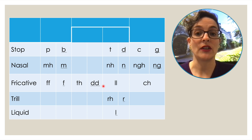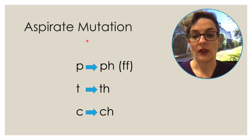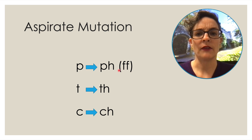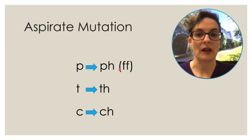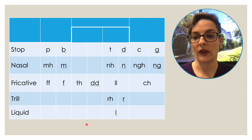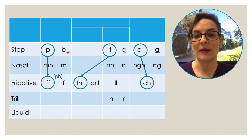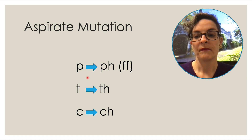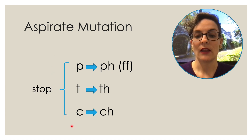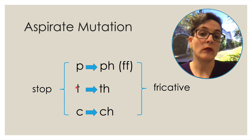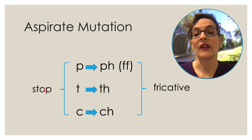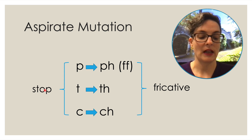So how can we apply the how dimension to mutations? Look at aspirate mutation: P, T, K, and the corresponding mutated forms F, TH, H/CH. Look at where these sit on our chart — they're all stops changing to fricatives. Also there are no wiggly lines, so they're all voiceless. They're all voiceless stops and they change to voiceless fricatives. So they change on the how dimension — that's what is happening in aspirate mutation.